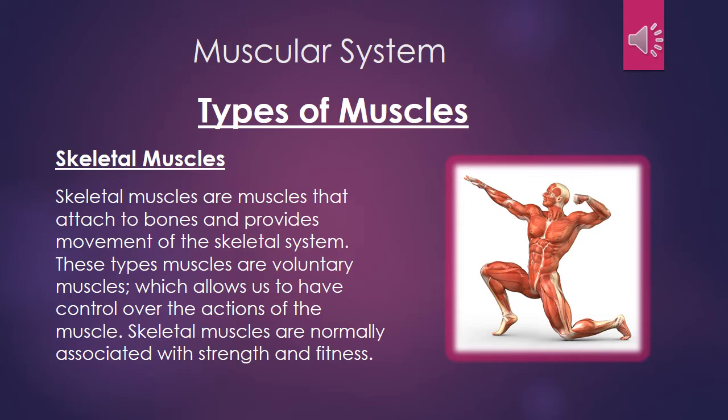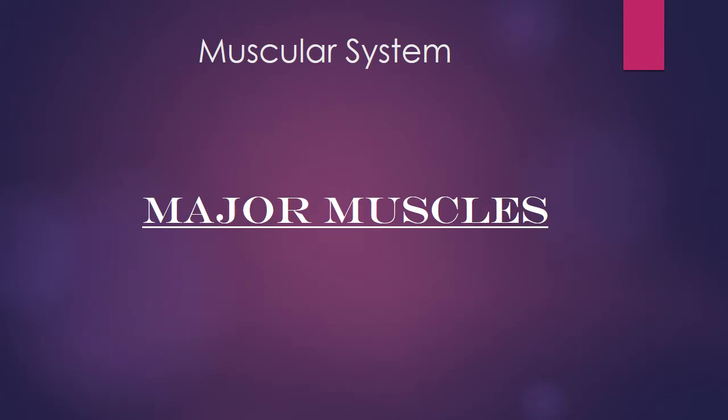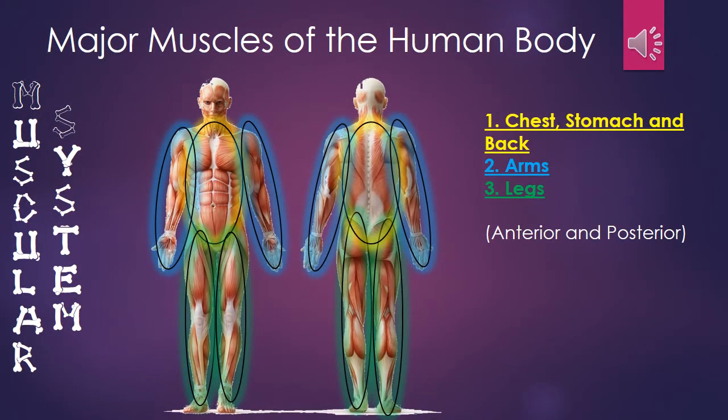Lastly is the skeletal muscles. Skeletal muscles are muscles that attach to bone and provide movement of the skeletal system. These types of muscles are voluntary muscles, which allow us to have control over the actions of the muscles.